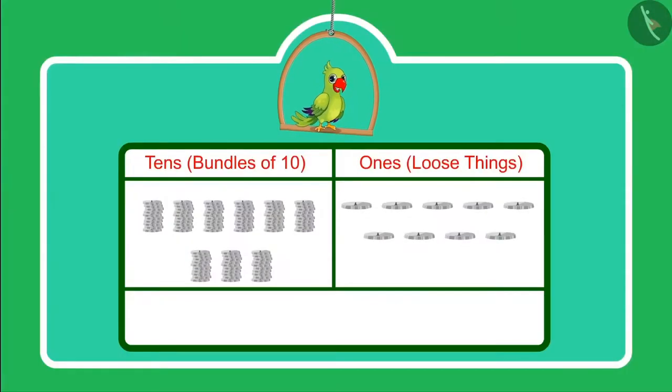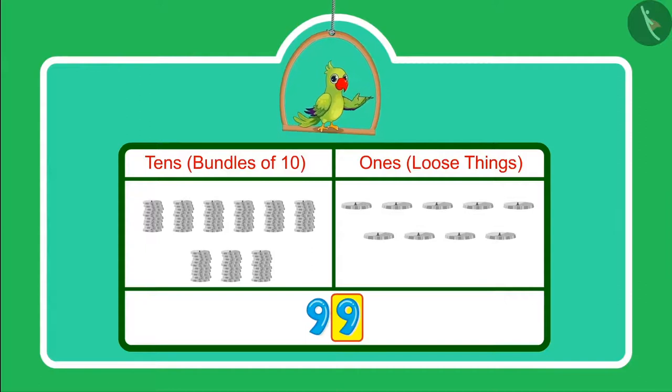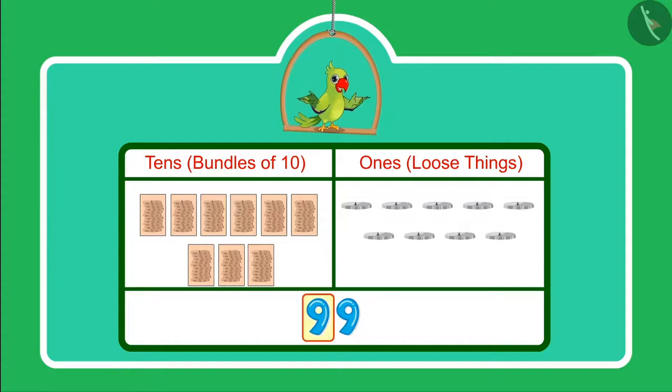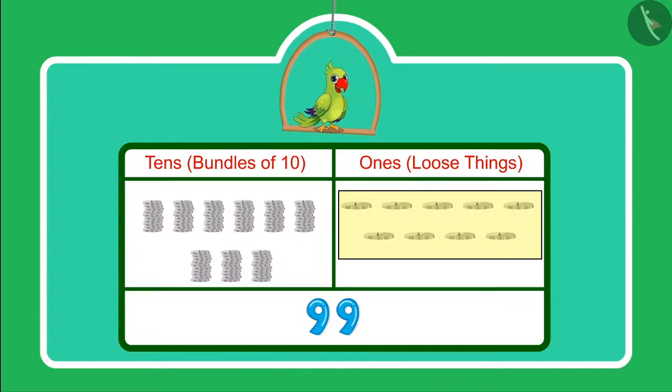Yes children, we write 99 like this. Here 9 is in the 10s place and this 9 is in the 1s place. That means we have 9 10s which can be also called as 9 bundles of 10s and 9 1s.